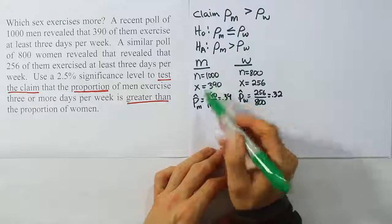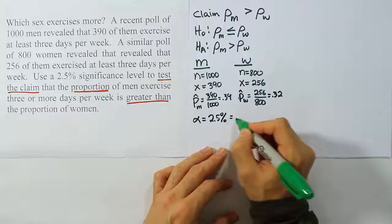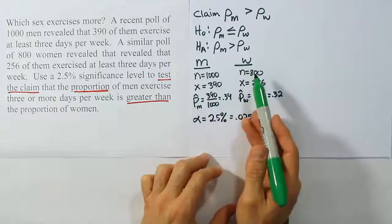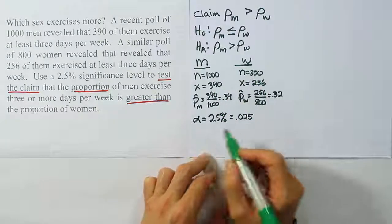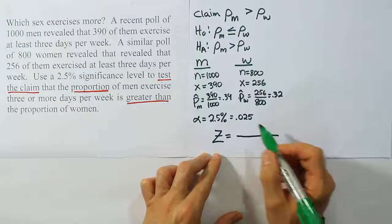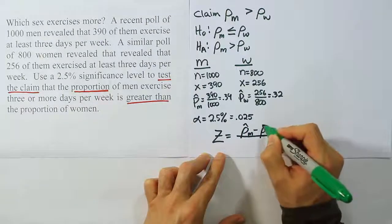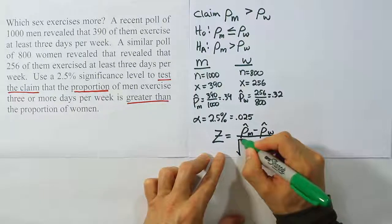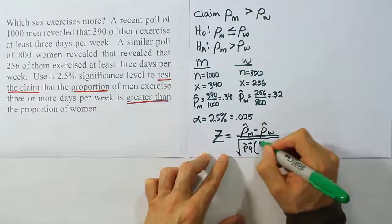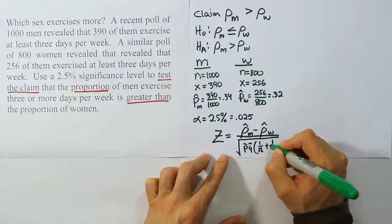Our significance level is 2.5%, or 0.025. Because of our large sample sizes and the fact that this is a hypothesis test about proportions, we're going to use a z-distribution. The test statistic formula is: p-hat for men minus p-hat for women, divided by the square root of p-hat times q-hat times (1 over N1 plus 1 over N2).